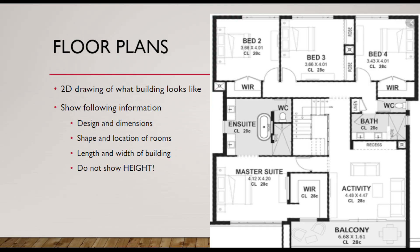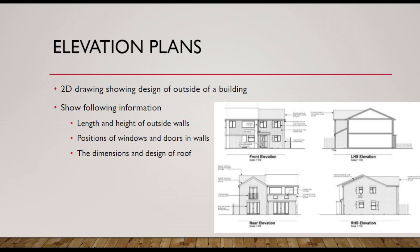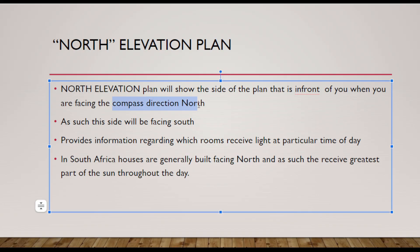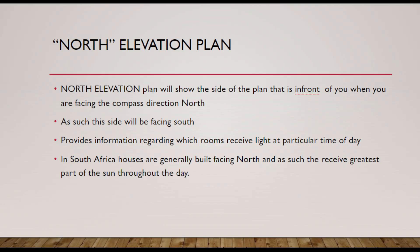Your floor plan gives you that top-down view, so from the floor plan alone you wouldn't know if there's a second floor unless there's another picture labelled floor two. Now, the north elevation plan will show the side of the building that is in front of you when you are facing the compass direction north. It provides information regarding which rooms receive light at a particular time of day. In South Africa, houses are generally built facing north — facing the direction of the sun — and as such receive the greatest part of the sun throughout the day. So if someone says it is a north-facing house, it means that one side of the house is directed towards compass north and will generally receive most of the light.